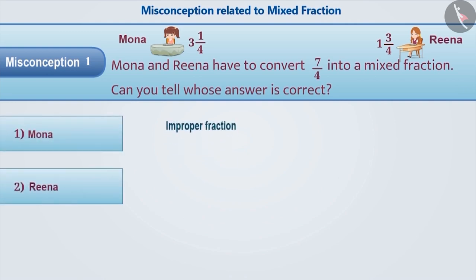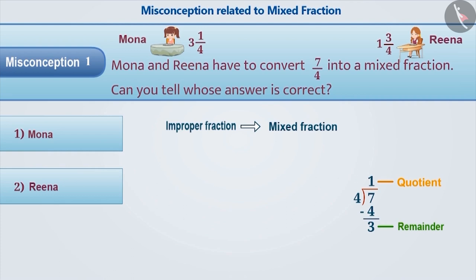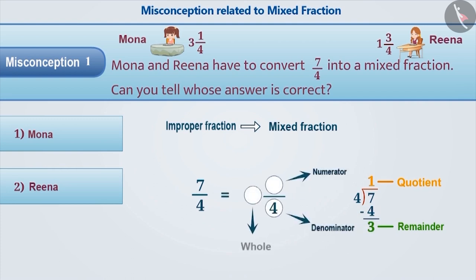Sometimes, during conversion of an improper fraction into a mixed fraction, the quotient and remainder are not written correctly in the form of a mixed fraction. For 7 divided by 4, we get 1 as quotient and 3 as remainder. But while writing a mixed fraction, the remainder is written in the place of whole and quotient in the place of numerator, giving an incorrect answer of 3 1/4.